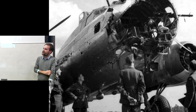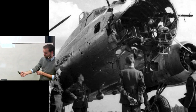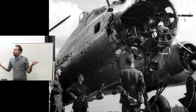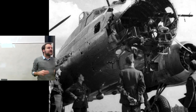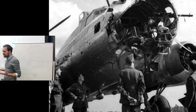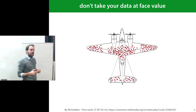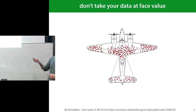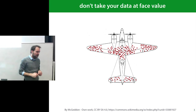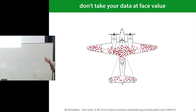They collected data on where their planes were most likely to get shot and gave that to a bunch of statisticians, asking them to tell us where we should reinforce the planes. At first the instinct was to take the data and reinforce the planes where they were getting hit the most. So these are all the places where a plane would be hit a lot — reinforce the tips of the wings, reinforce the central part.